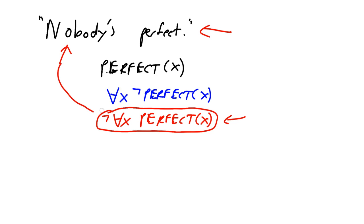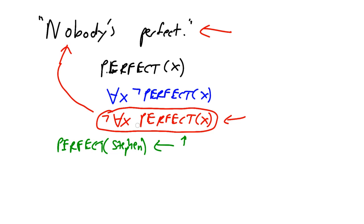If you fed that wrong expression to a knowledge base, it would fail to draw a number of different conclusions. In particular, if you had that red sentence and then someone were to suggest "perfect(Stephen)," your knowledge base would not be able to tell that that's false. Because that information merely says it's not true that everybody's perfect. That doesn't contradict "perfect(Stephen)"—there could be one perfect person, or even a hundred, and that doesn't contradict the red thing. It would only contradict it if you assert that every single person is perfect.